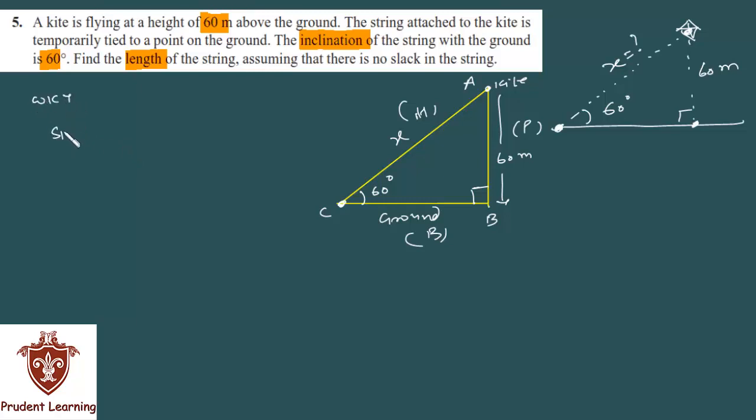Now, we know that sin of 60 degrees - sin theta is perpendicular upon hypotenuse - AB upon AC. And AB is 60 meters given. And AC is X. Now, sin of 60 degrees is root 3 by 2, equals 60 upon X. Now, if you cross multiply, X will be 60 into 2 upon root 3, which gives us 120 upon root 3.